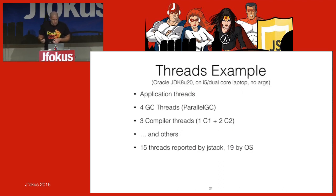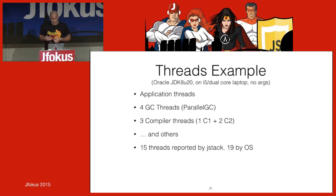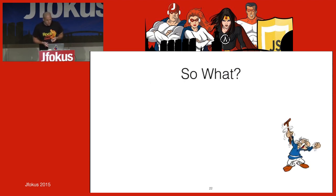An example application running on a laptop gets four GC threads by default, three compiler threads, and other threads — 15 reported by JStack but 19 if you ask the OS. There's a whole group of threads playing around. The number of threads changes according to what you tell the JVM to do.